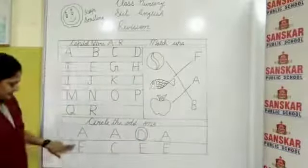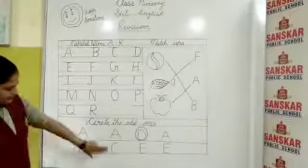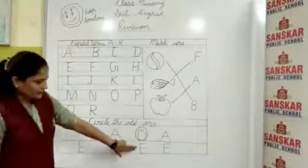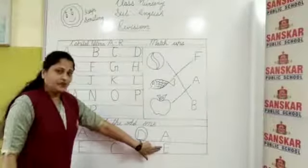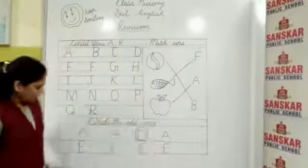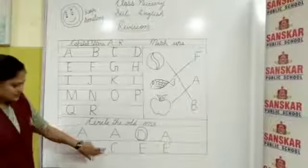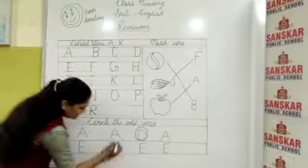Now next is E for elephant, C for cat, E for elephant, and again E for elephant. Then which letter is different? C for cat. So make a circle.